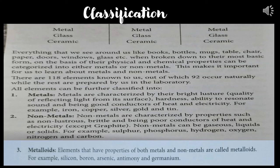According to the book, everything we see around us — books, bottles, mugs, tables, chairs, paper, doors, windows, glass — when broken down to their most basic form, on the basis of their physical and chemical properties, can be characterized as either metals or nonmetals. This makes it important for us to learn about them, as our everyday life is mixed with metals and nonmetals.